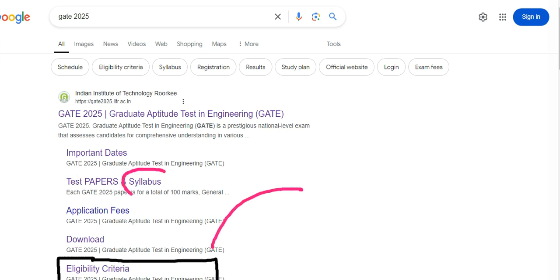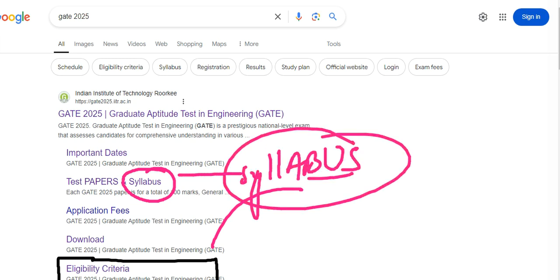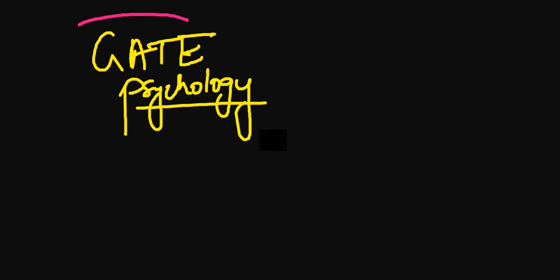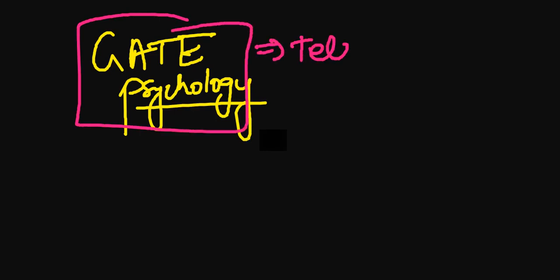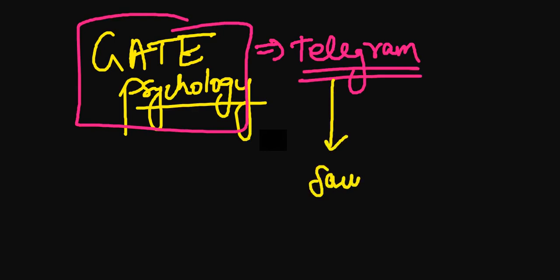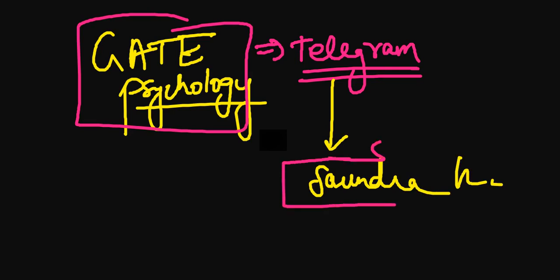In today's video we are discussing eligibility criteria, and in the next video we will discuss the syllabus and how to prepare. If you haven't watched the first video on 'What is GATE Psychology,' make sure you watch that — this is Part 2. Also, subscribe to the channel and join the Telegram group, where a recent PDF of the Sundra book will be shared, which is very helpful for UGC NET as well as GATE Psychology.